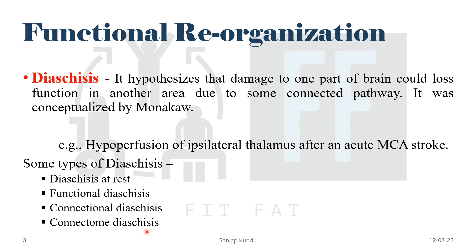The final type is connectome diaschisis. With advanced imaging techniques, the vast complexity of connections between neurons can be mapped — this map is called the connectome. It shows clusters of highly connected nodes linked by hubs. If damage is done to a hub, it can cause much more severe damage than damage to a non-hub node. This concludes the theories of diaschisis.